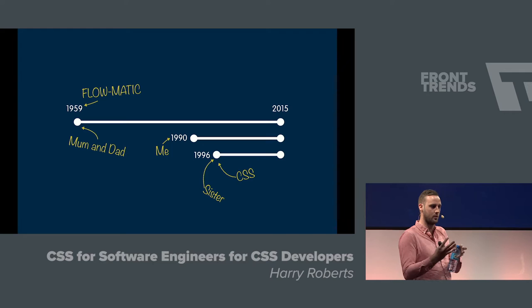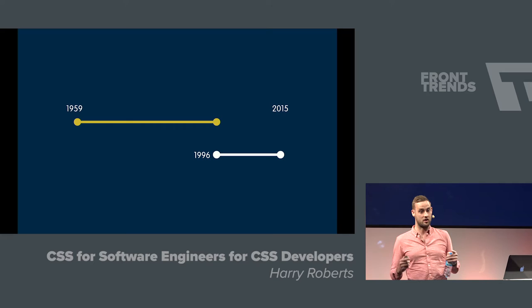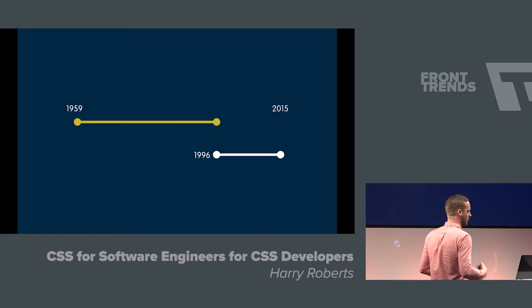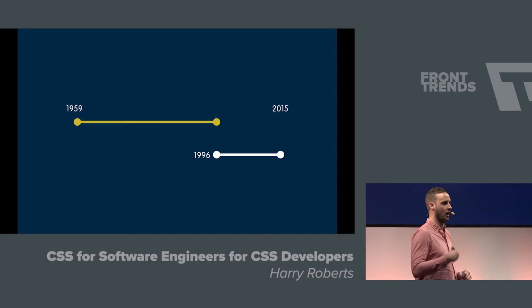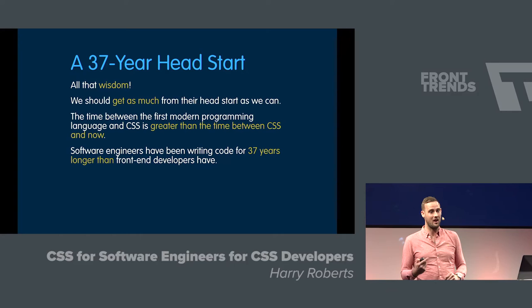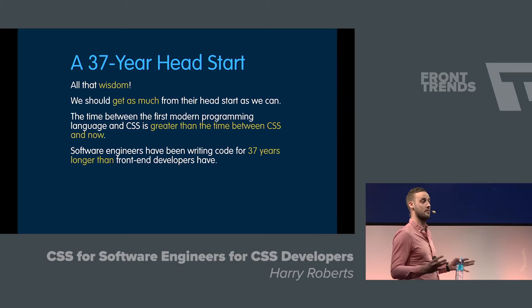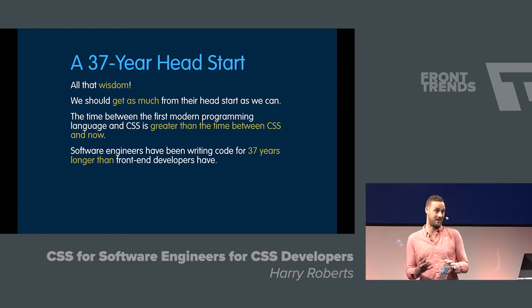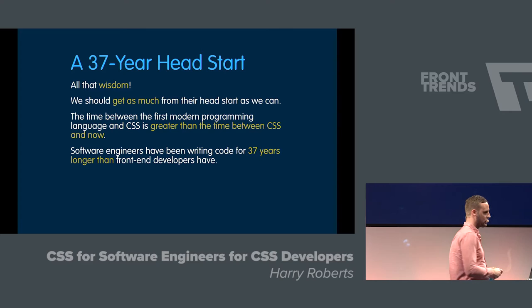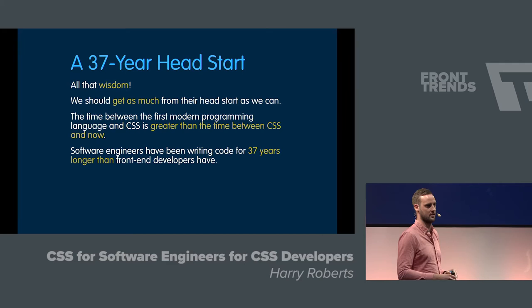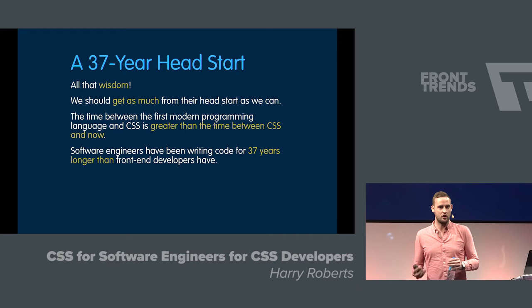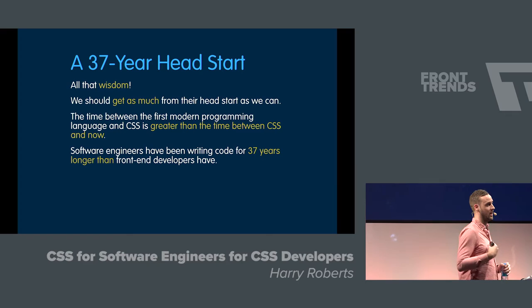Thinking about the difference between my parents and my sister is basically the difference between modern computer science and the work that I do. This 37 years of difference has a lot of very rich history. We tend to think that front-end development only recently got difficult, or that we only recently need to start thinking about performance, architectures, abstractions. Programmers have been solving this since the late 50s. Programming has been difficult since day one. We're not really solving many new things in a philosophical context. We've got this massive chunk of history where programmers have been solving problems that never existed before — a huge chunk of history that we as front-end developers can and should look to, to beg, steal, and borrow as much as we can.